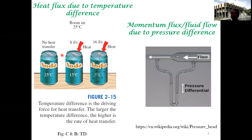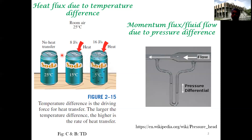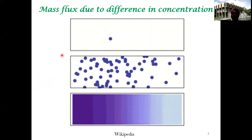For example, a momentum flux or fluid flow can exist because of a difference in pressures. One way of making fluids flow is by increasing pressure on one side and having lesser pressure on the other side. So there is a different driving force that gives rise to a different kind of flux.